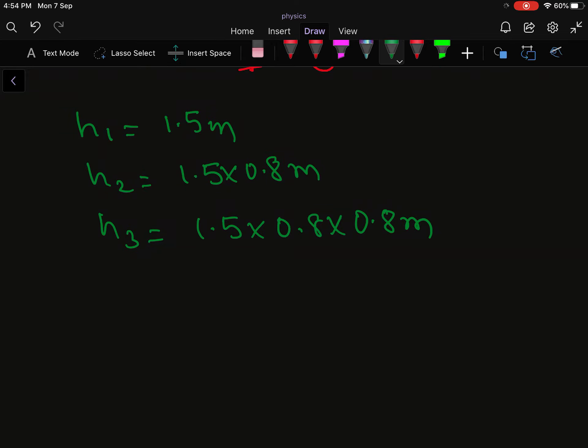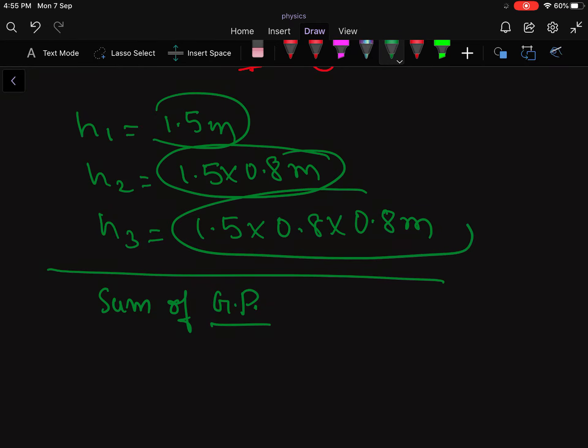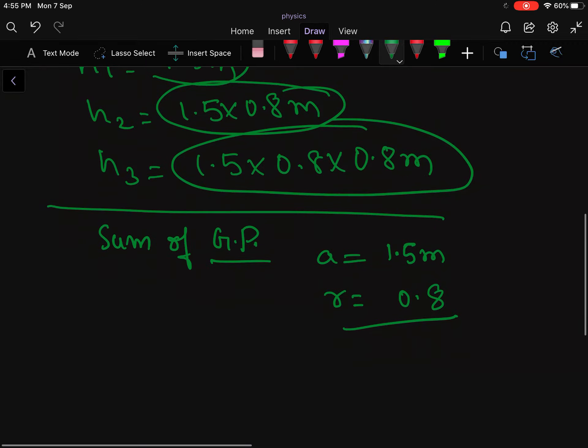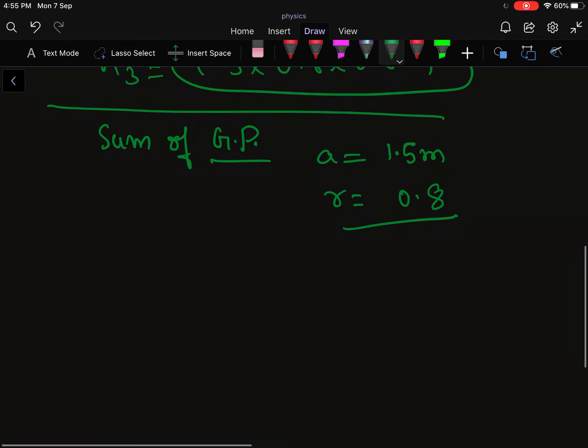So you can see this. Now what you have to do is find the total distance. For total distance, you have to do the sum of GP, as these terms are in geometric progression. You can see that the first term, indicated by a, is 1.5 meters, and every time the ratio 0.8 is multiplied. You can directly take the ratio as 0.8 - ratio has no unit.